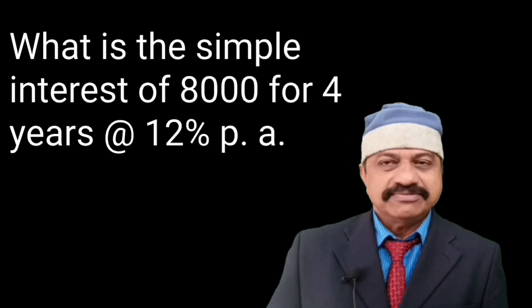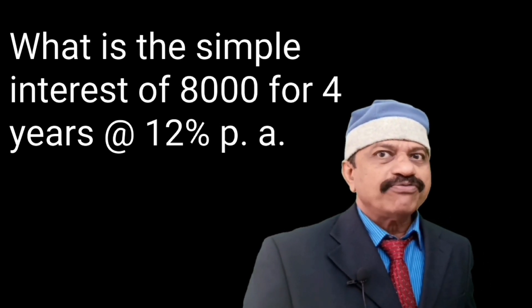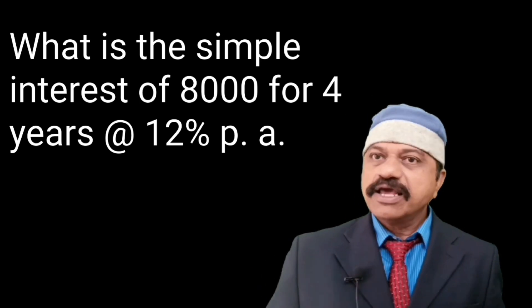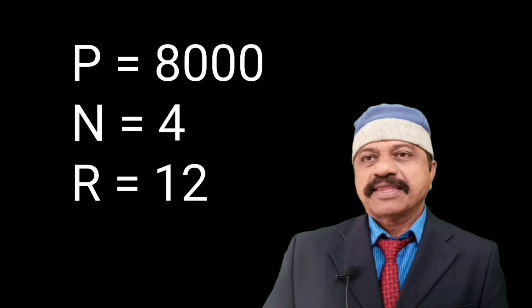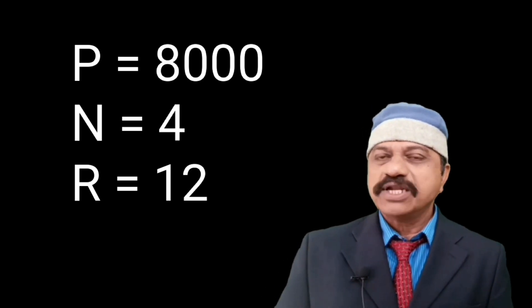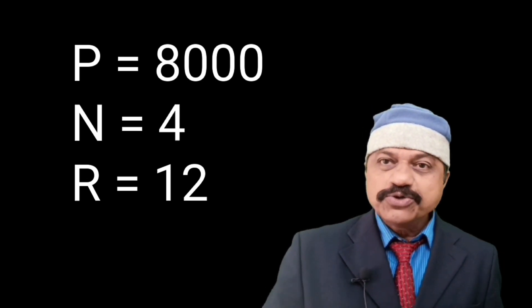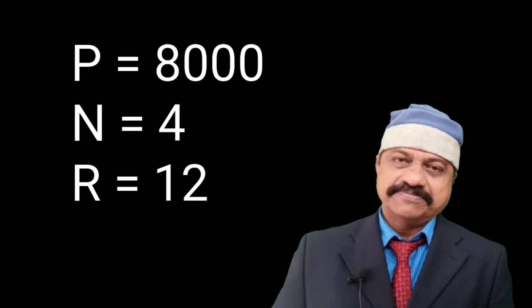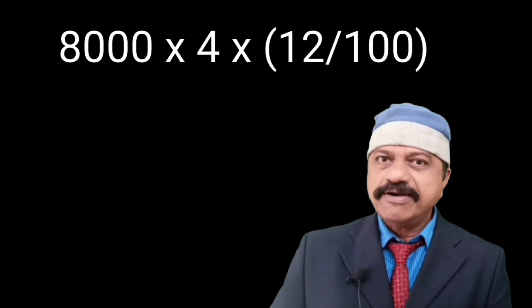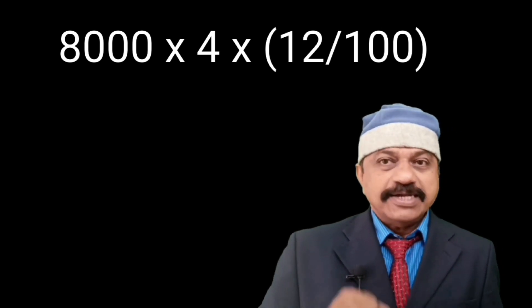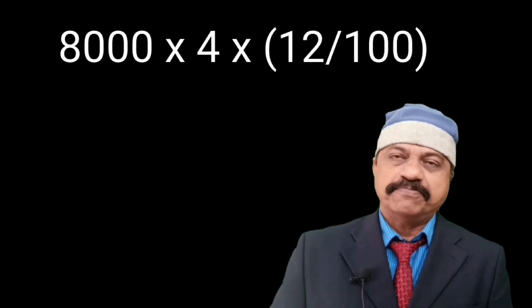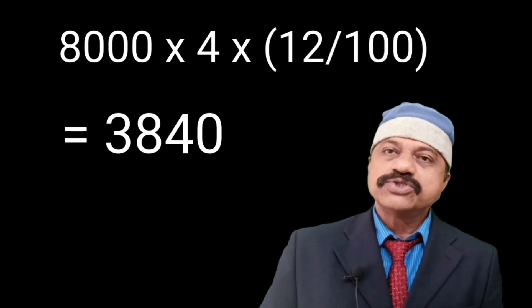Example 5: what is the simple interest of 8,000 for 4 years at the rate of 12% per annum? Here P is equal to 8,000, N is equal to 4 years, and R is equal to 12. PNR divided by 100 is equal to 8,000 into 4 into 12 divided by 100. The answer is 3,840.